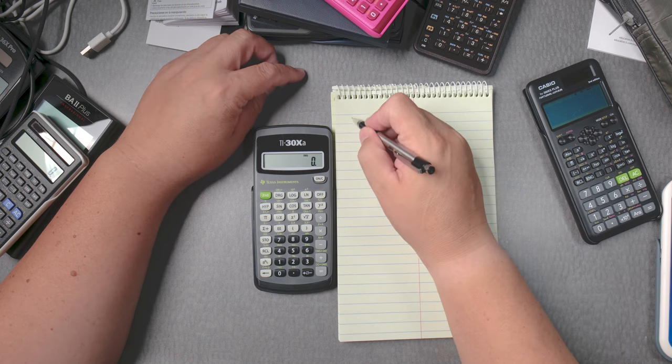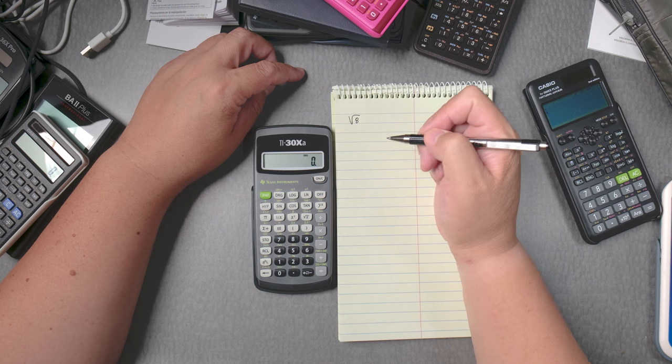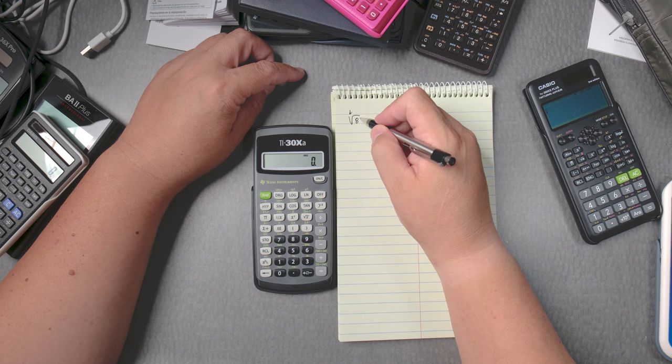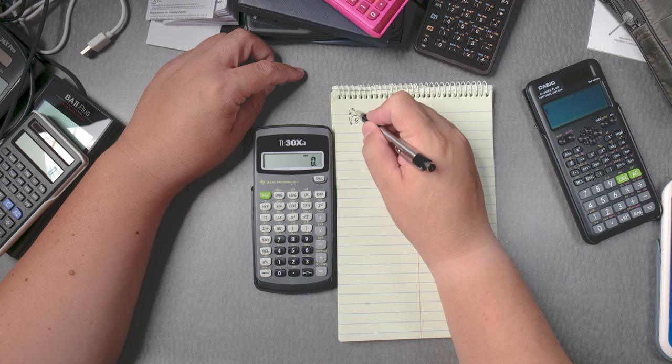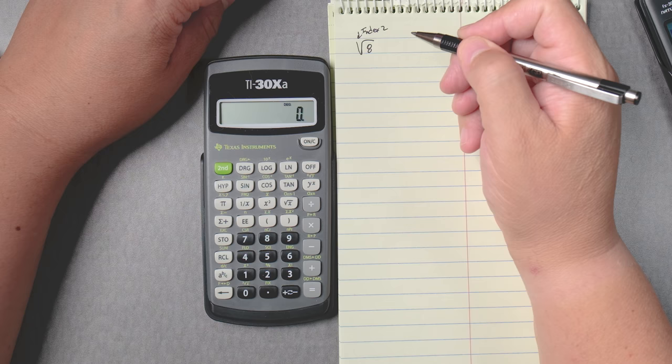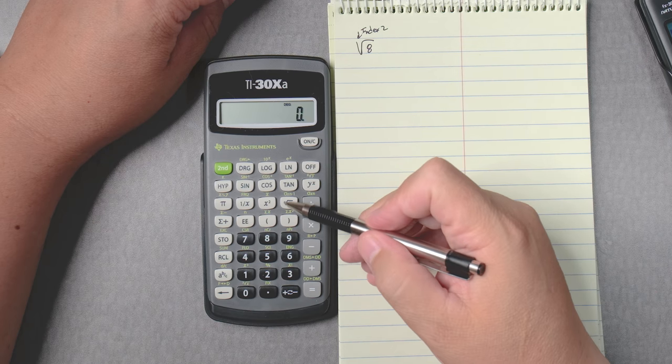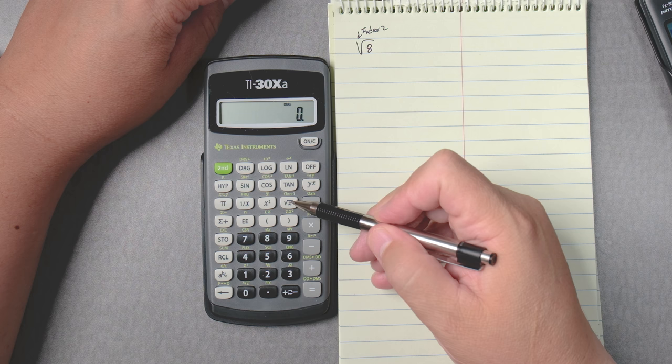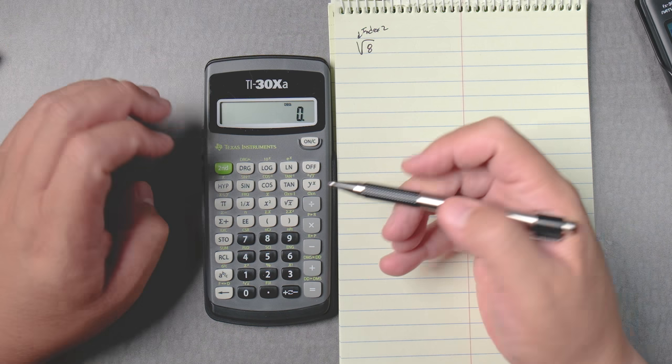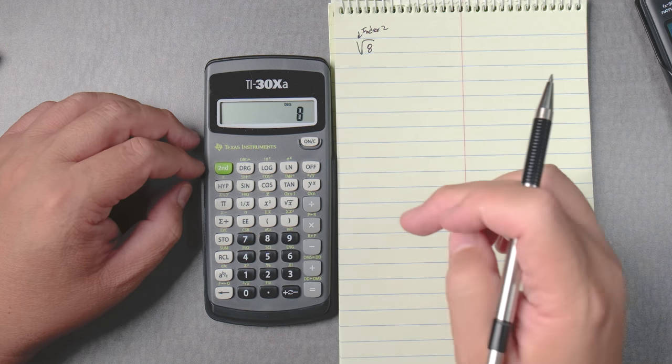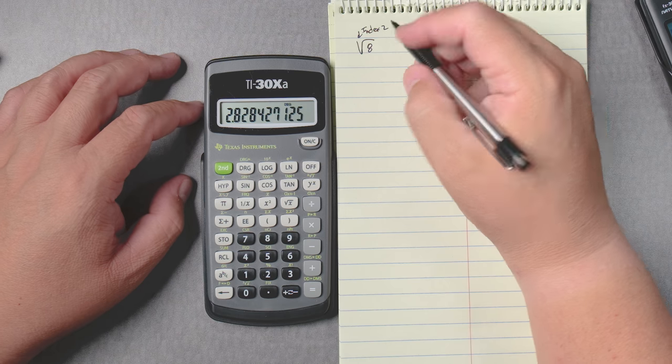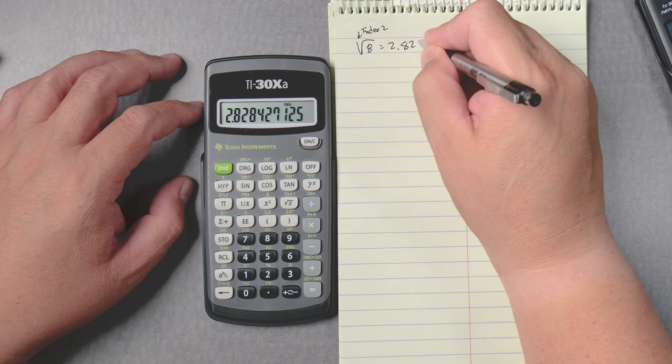Let's do the square root of 8. When you draw a square root it has an index automatically of 2. The calculator will also be a square root with an index of 2. We're going to type in 8 and then press the square root button and we get 2.828.